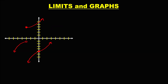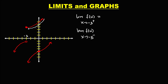For this graph, to evaluate the limit of f(x) as x approaches negative 3 from the right, and also from the left. For the right side limit, x approaches negative 3 from the right, and the limit is equal to positive 4. For the left side limit, x approaches negative 3 from the left, and the limit is equal to negative 1.